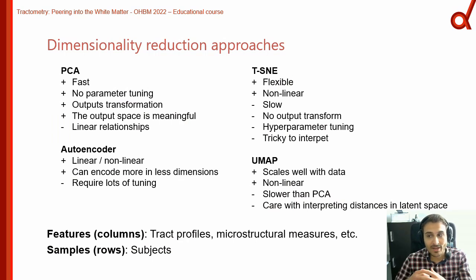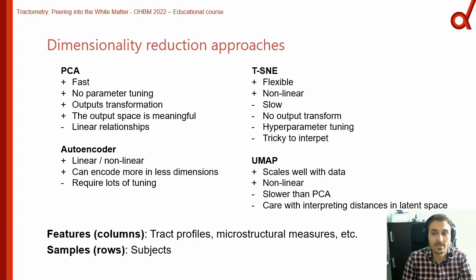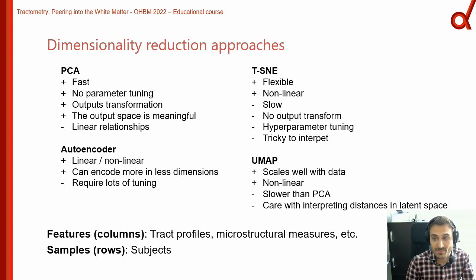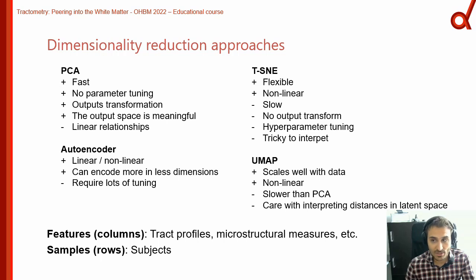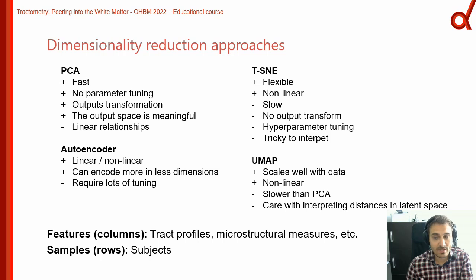Our data is now in a nice format to apply dimensionality reduction. For completeness, there are various methods to choose from, and it is up to you to decide what is best suited for your problem. Some approaches are better suited for visualization only — for example, t-SNE — while some have actual meaning in the interpretation of the resulting components, for example with PCA. The next few slides will show an example of how PCA can be applied in the context of tractometry.